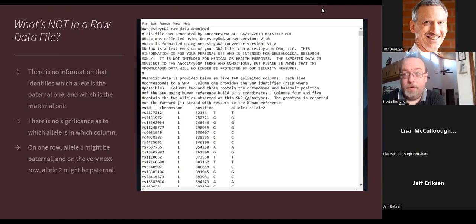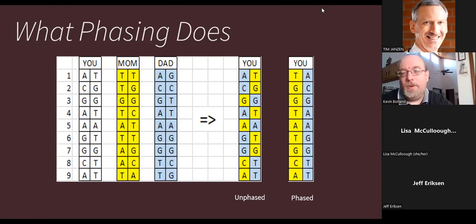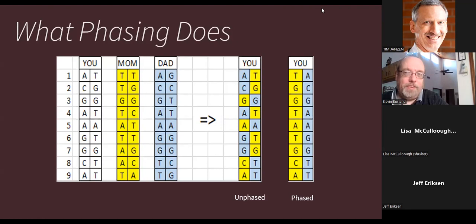Phasing is the solution to this problem. If you also tested both parents, you can make deductions about which allele you got from which parent. For example, if you have A and T, mom had T and T, and dad had A and G — you know you got T from mom because she had nothing else to pass you, so you must have gotten the A from dad. A phasing algorithm makes these kinds of inferences.